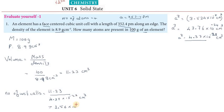So this gives 2.56 into 10 to the power 23 unit cells. This is the total volume, 11.23 cm³. This is the total volume from mass divided by density. The total volume of the element.